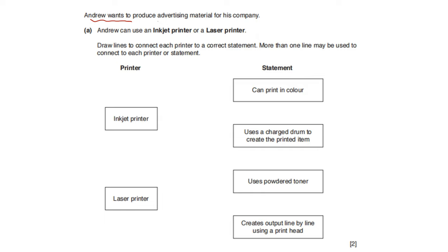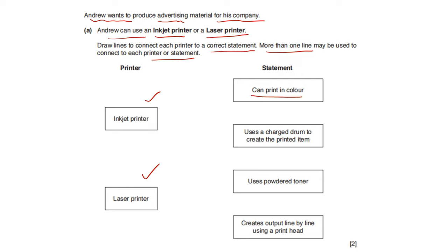Andrew wants to produce advertising material for his company. Andrew can use an inkjet printer or a laser printer. Draw lines to connect each printer to the correct statement — more than one line may be used. Both inkjet and laser printers can print in color.